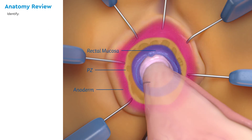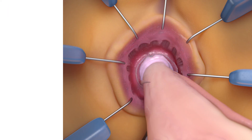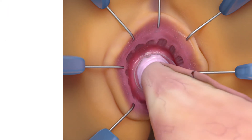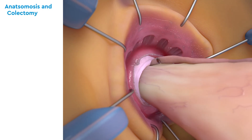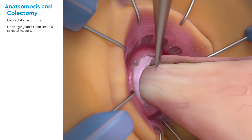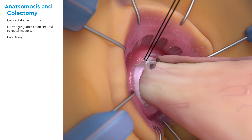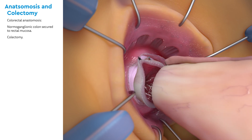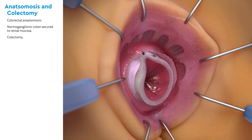In preparation for the anastomosis, identify the skin, anoderm, the pectinate zone, and the rectum. To begin the colorectal anastomosis, the normal ganglionic colon is secured to the rectal mucosa with a full thickness stitch. Next, the colectomy is performed, the specimen is removed, and sent to pathology.